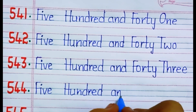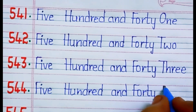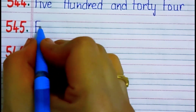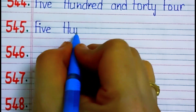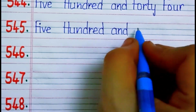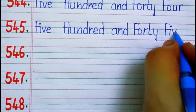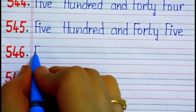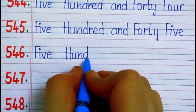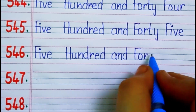Five four four — five hundred and forty four. F-O-R-T-Y, forty. F-O-U-R, four. Forty four. Five four five — five hundred and forty five. F-O-R-T-Y, forty. F-I-V-E, five. Forty five. Five four six — five hundred and forty six. F-O-R-T-Y, forty. S-I-X, six. Forty six.